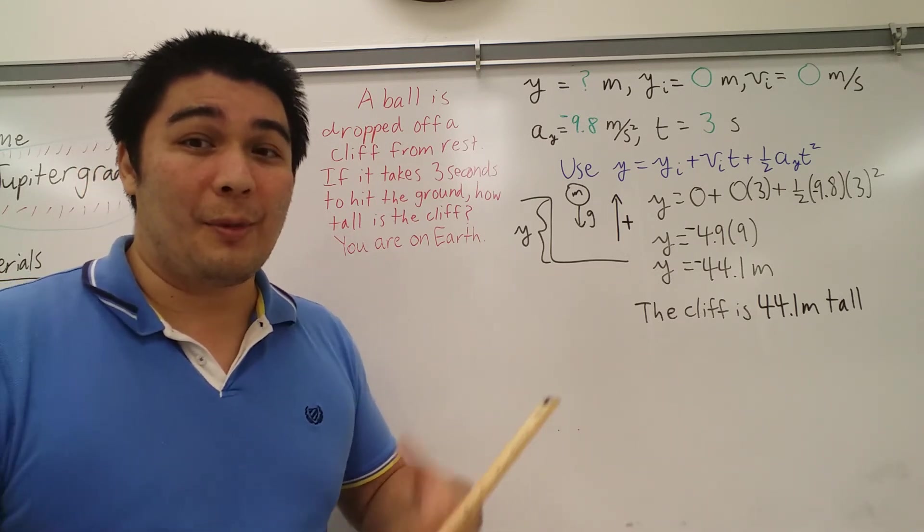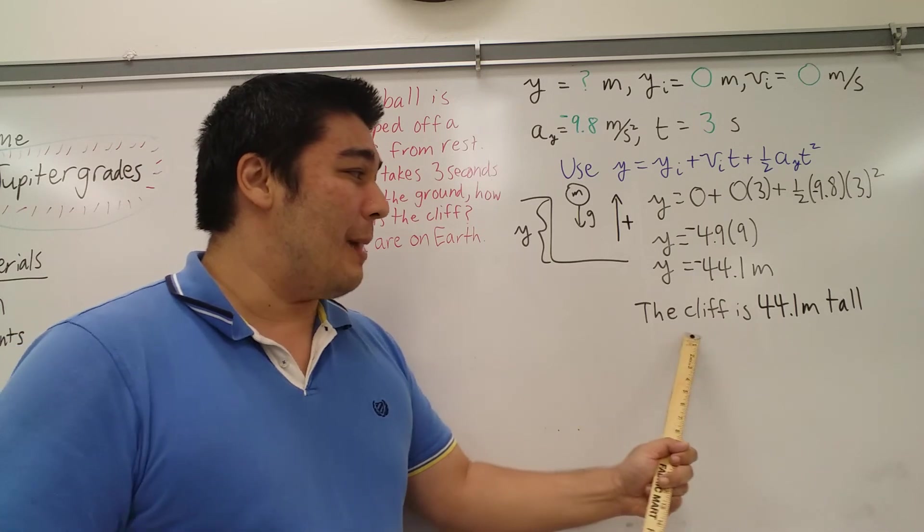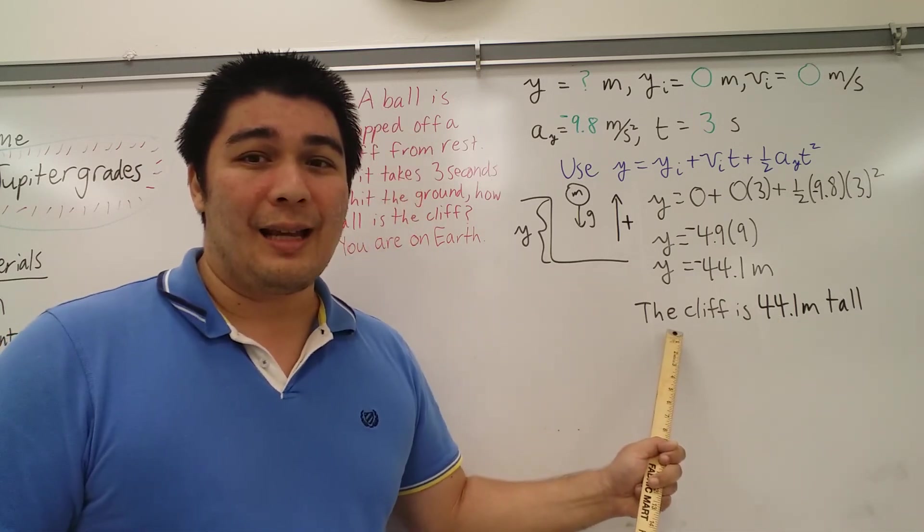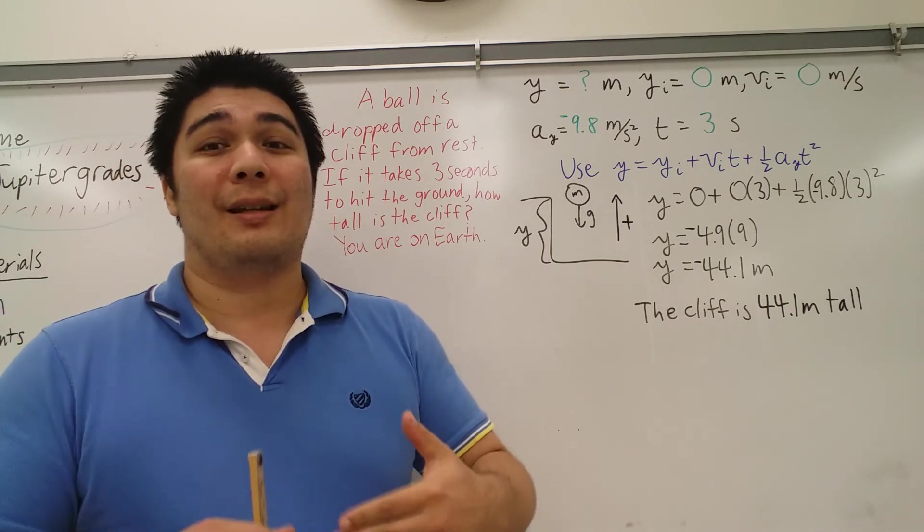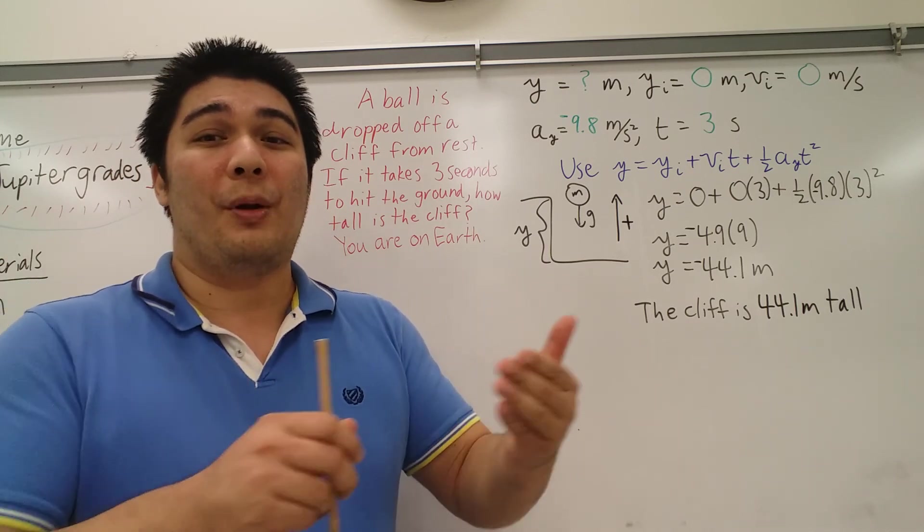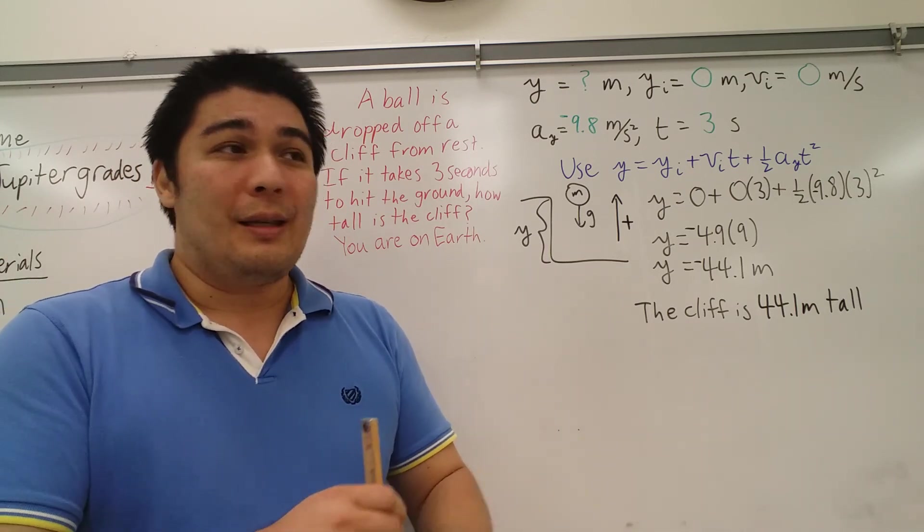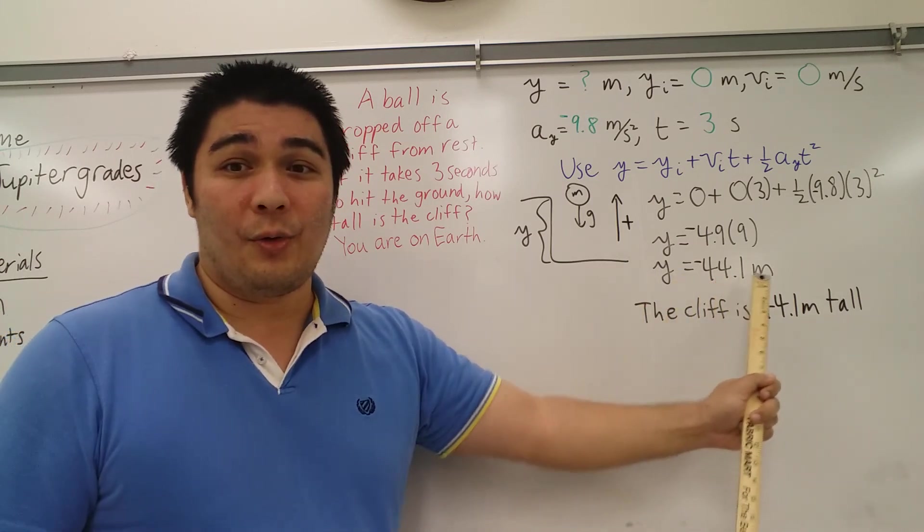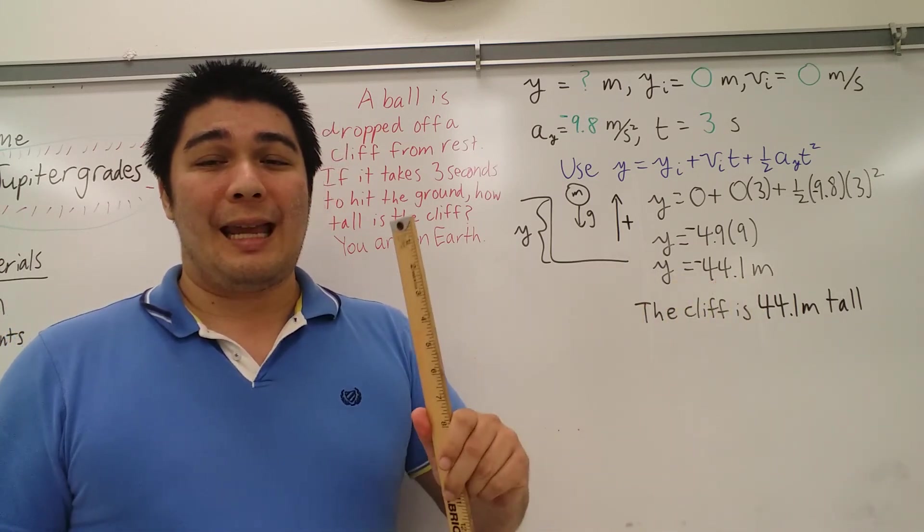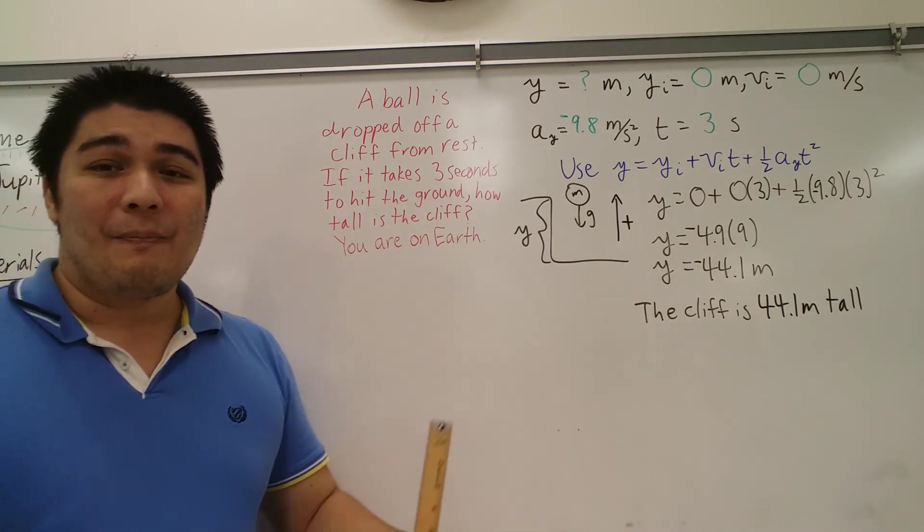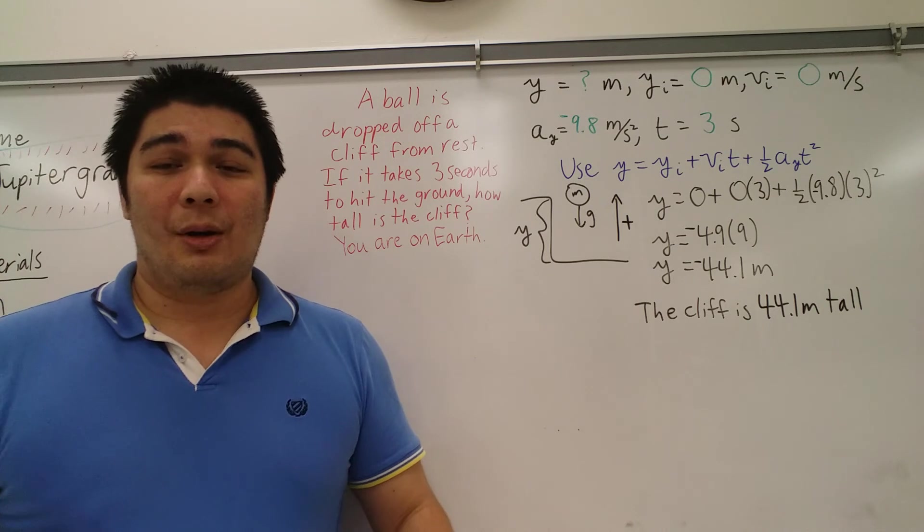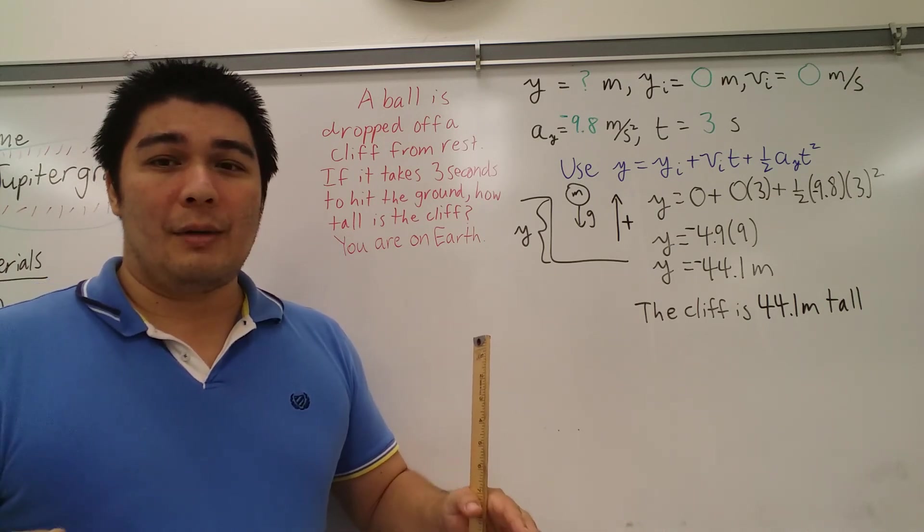So that's exactly why from our last video, I said it would matter that you write your answer out as a sentence because now when you say, okay, the cliff is 44.1 meters tall, your answer was negative 44.1 meters, but the answer to the question of how tall is the cliff remains the same.